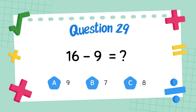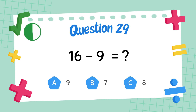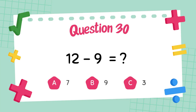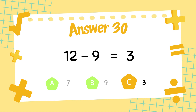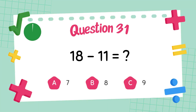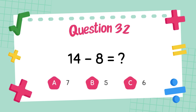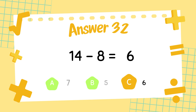What is 16 minus 9? The answer is 7. What is 12 minus 9? The answer is 3. What is 18 minus 11? The answer is 7. What is 14 minus 8? The answer is 6.